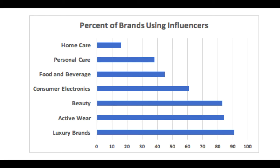The majority of active wear and beauty brands are also using this marketing strategy. When social media influencers were first becoming popular, it was common for the influencer to post content in exchange for the free product or service. However, with its growing success, it is more common for companies to pay influencers for their work. The typical influencer is paid under $250 per post, with only around 25% of businesses reporting they pay a higher amount for content.